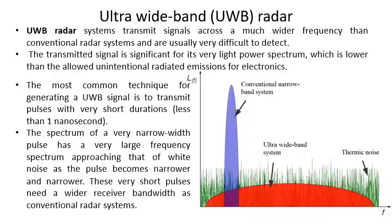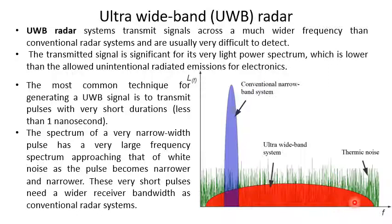Ultra-wideband (UWB) radar systems transmit signals across a much wider frequency than conventional radar systems and are usually very difficult to detect. The transmitted signal has a very low power spectrum — lower than the allowed unintentional radiated emissions for electronics. Compared to a conventional narrowband system with a small bandwidth, a UWB system spreads across an extremely wide frequency range, and its peak power is correspondingly very small.